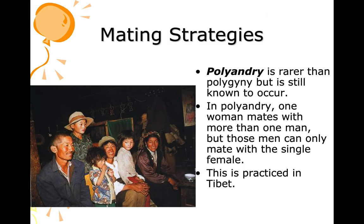Polyandry is rarer than polygamy but is still known to occur. In polyandry, one woman mates with more than one man, but those men can only mate with that single female. This is practiced in Tibet — two brothers sharing one wife.